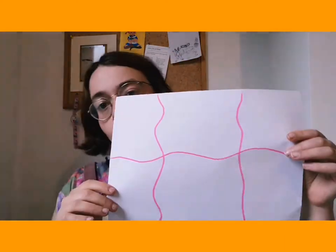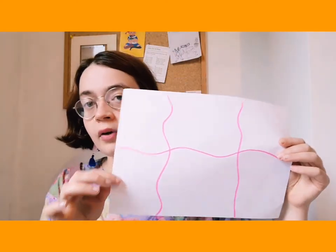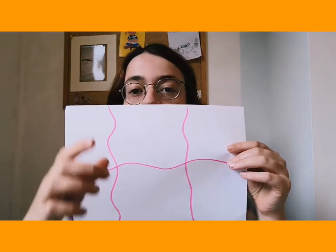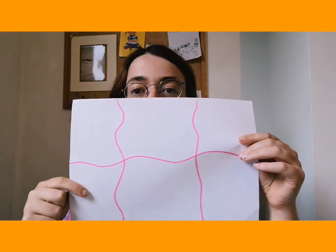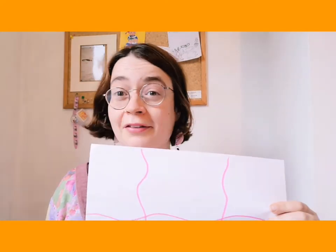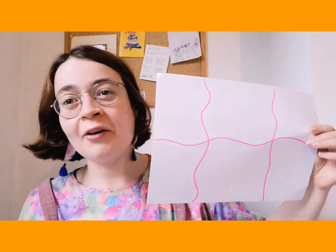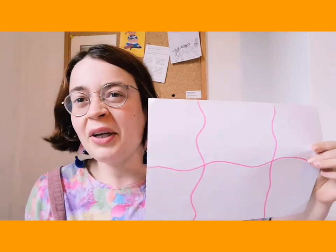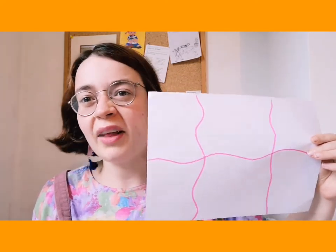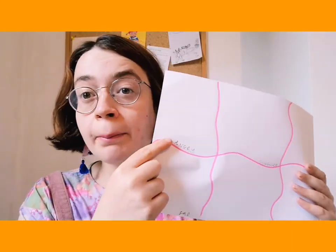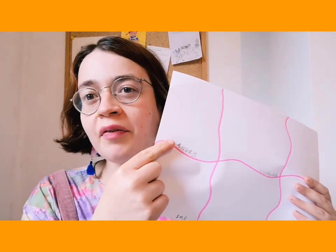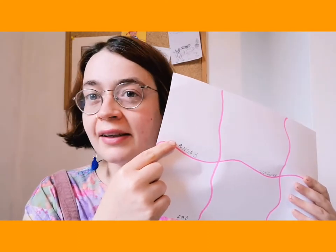I want you to split your paper into six squares — you can do that by drawing two lines down the middle and then one across. Don't worry about the lines being straight; I've made mine nice and wavy because we don't have to make straight lines — that's not what this is about. In each one of my squares I've written a different emotion that I think I feel on a day-to-day basis.